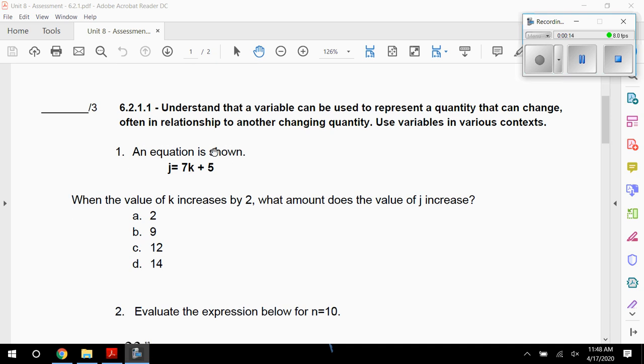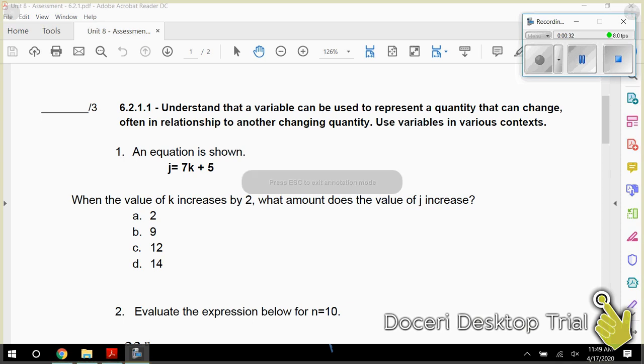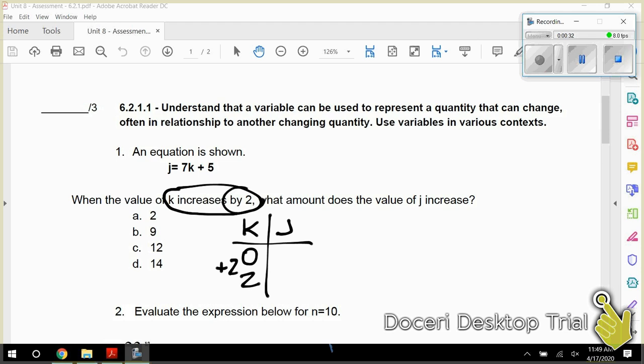So for this first problem, it says an equation is shown: J equals 7K plus 5. It says when the value of K increases by 2, what amount does the value of J increase? So just like you practiced with T tables, I would encourage you to make a T table here. So it says that K increases by 2. So I would put K here and J here, and I would just go 0 and 2. So that shows an increase of 2, right?